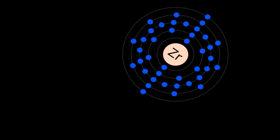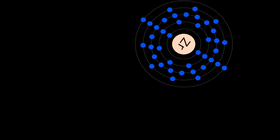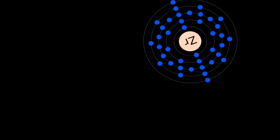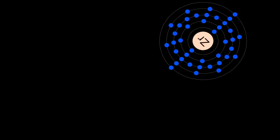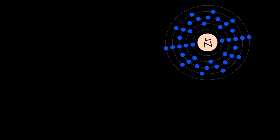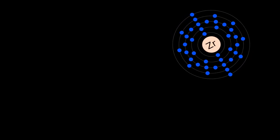Zirconium is mainly used as a refractory and opacifier, although small amounts are used as an alloying agent for its strong resistance to corrosion. Zirconium forms a variety of inorganic and organometallic compounds such as zirconium dioxide and zirconocidichloride, respectively.